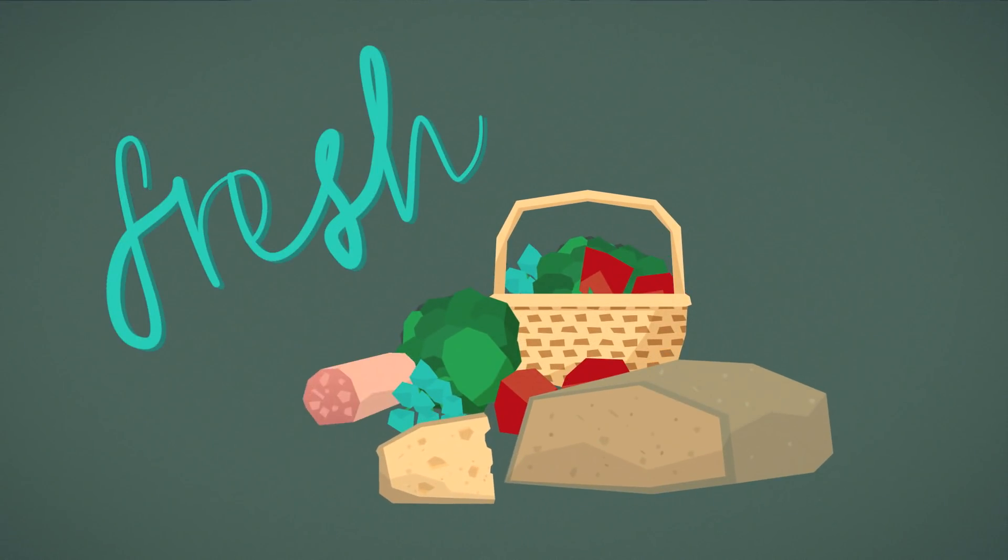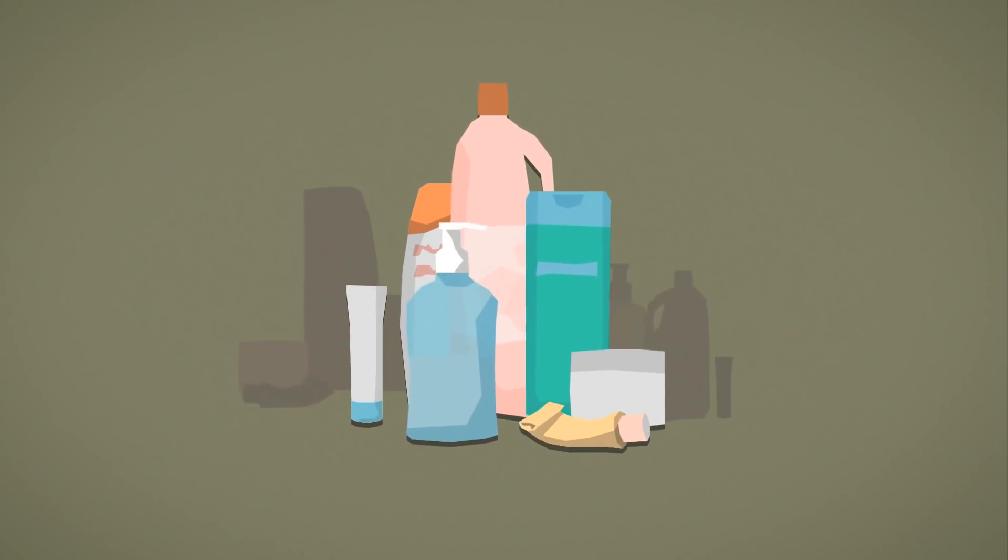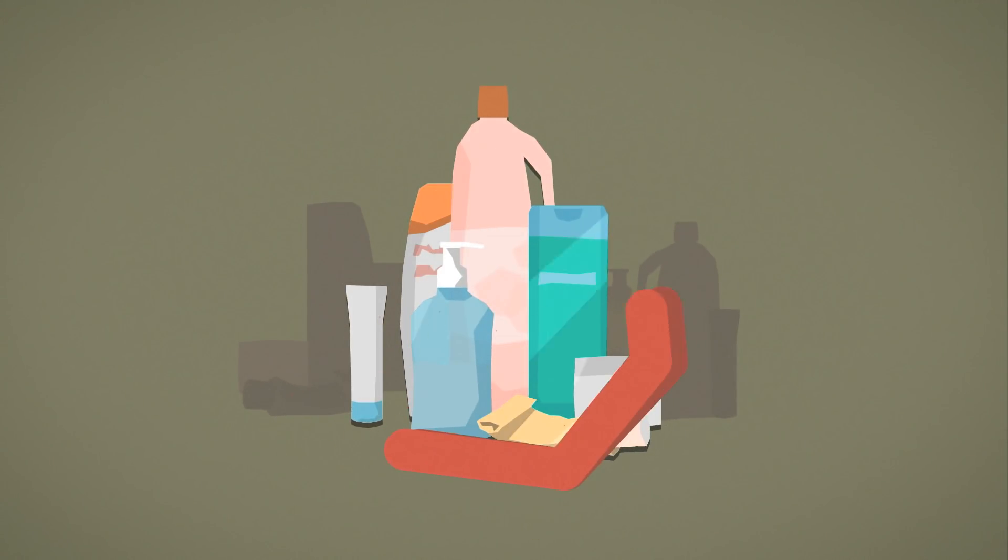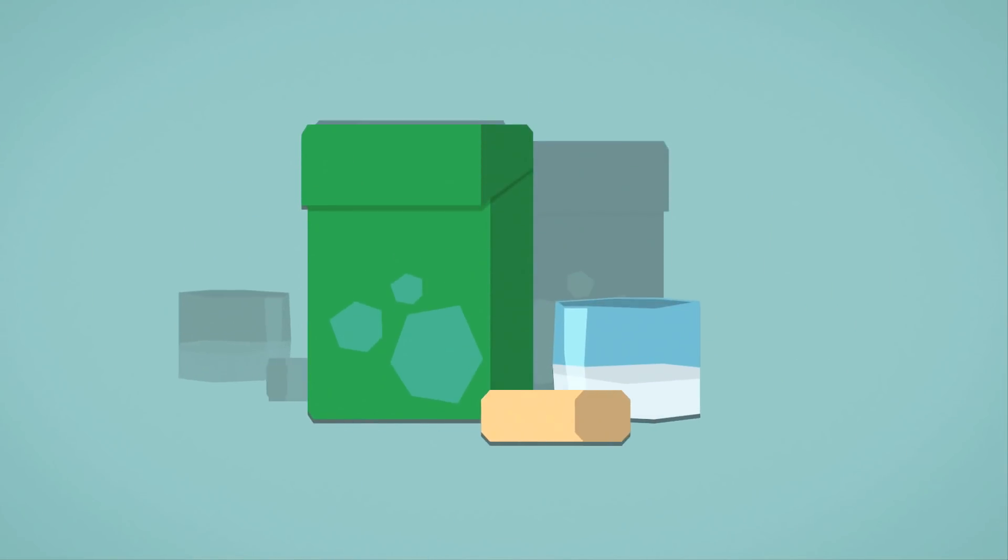Buy fresh food like fruit and vegetables, bread, cheese, and meat loose. Instead of hand wash and liquid detergent in plastic packaging, you could use soap and washing powder in cardboard packaging.